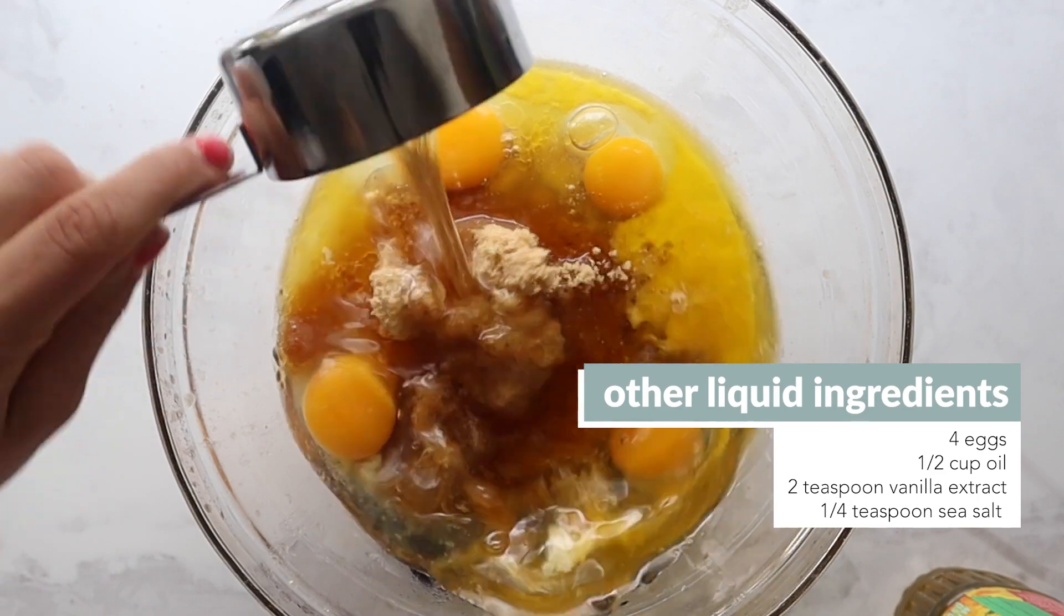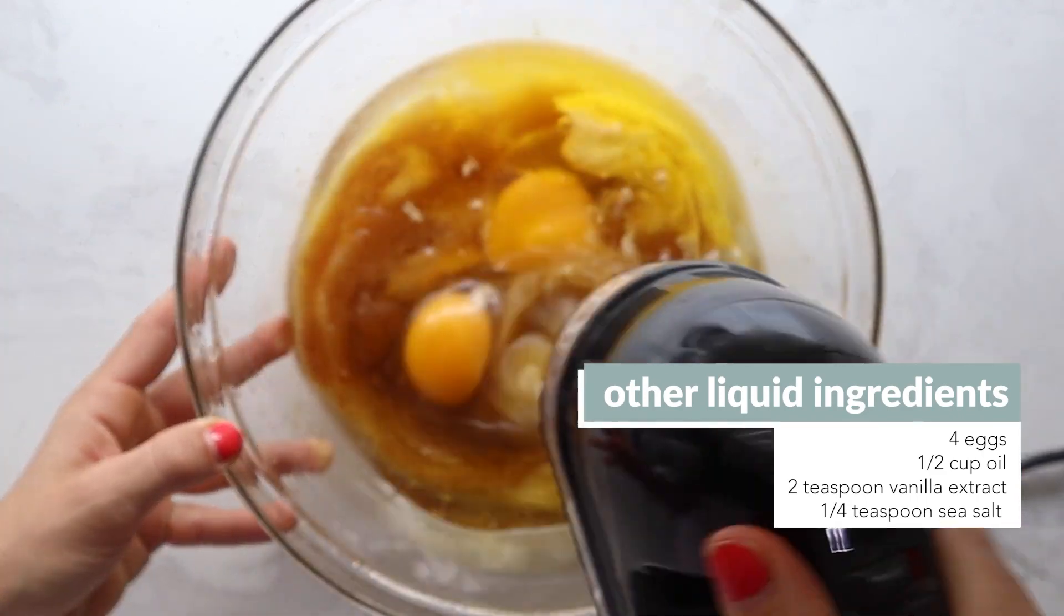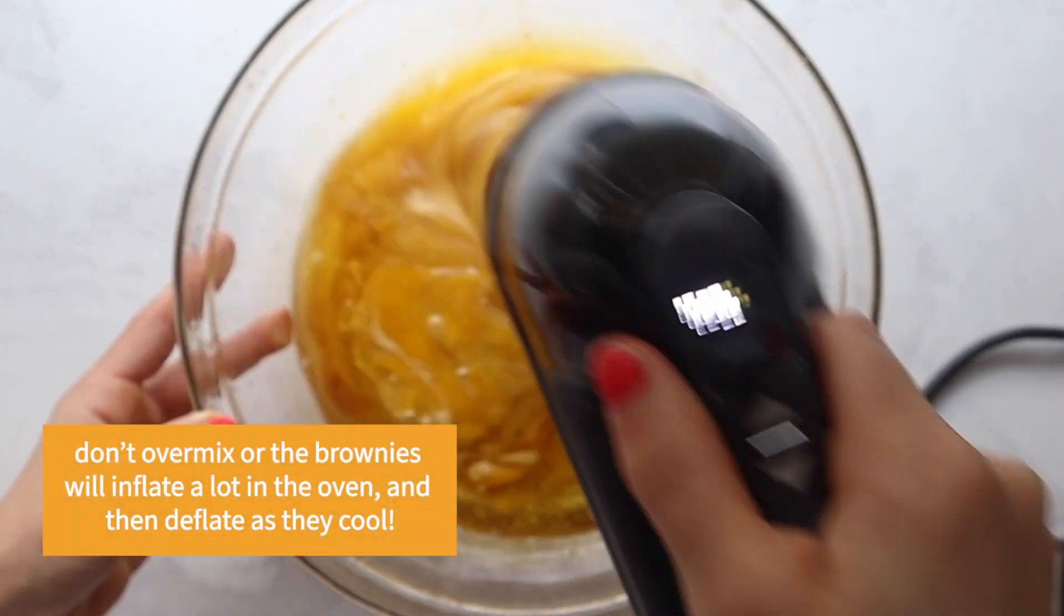Then you're going to add your sugar, eggs, oil, vanilla extract, salt, give it a good mix, and then add in your cocoa powder.